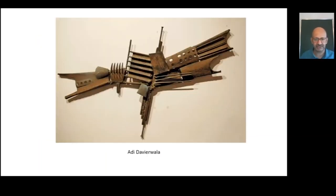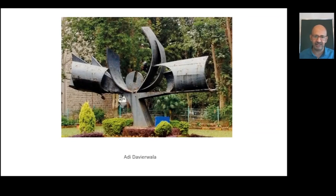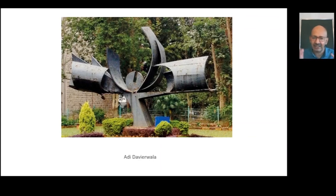The next important sculptor from this phase is Adi David Waller. He is well known for his non-conventional use of materials — junk metals and raw metals — and the way he used them is a very strange imagination of sculpture where the rawness of the materials and the rawness of the shapes and forms are kept intact. There is no tendency to transform them into something visually well known. He retains the sculptural form exactly in that raw stage, in terms of both material and visual idea.